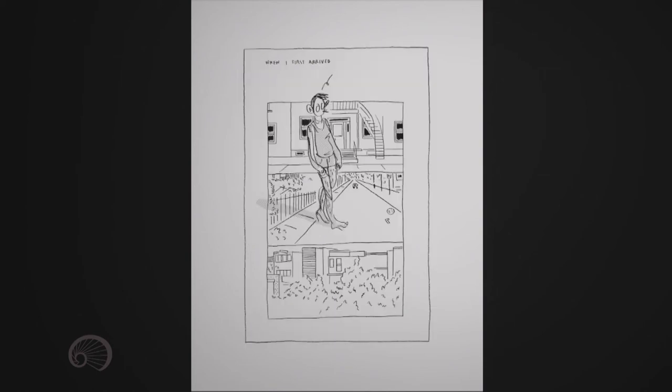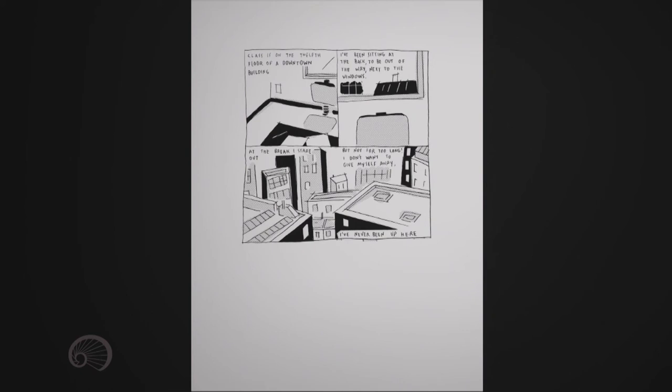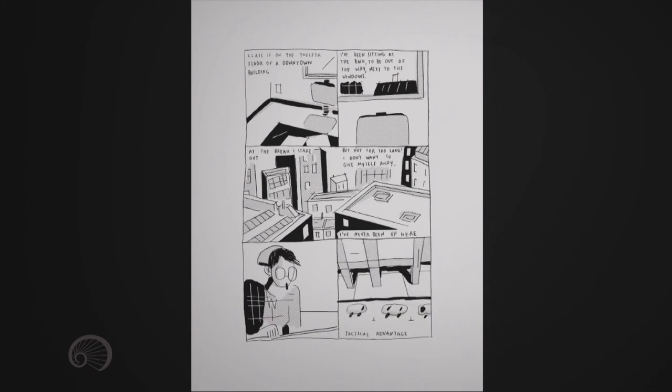When I first arrived, I had no understanding of the geography. The city filled in with every walk. Eventually, I made it downtown. Could be anywhere. Calm. Empty. As if it hid nothing and had nothing to hide. Class is on the 12th floor of a downtown building. I've been sitting at the back to be out of the way, next to the windows. At the break, I stare out. But not for too long. I don't want to give myself away. I've never been up here. Tactical advantage.